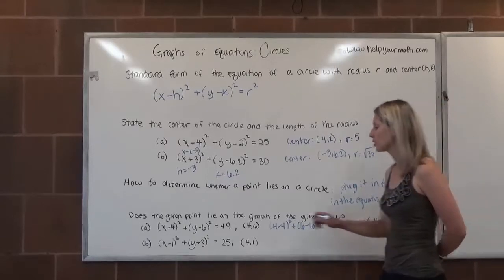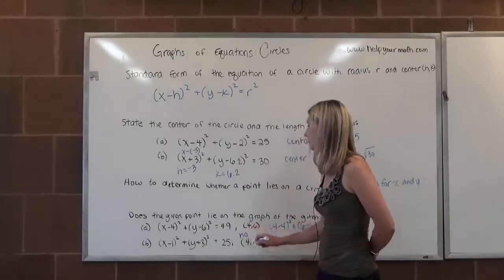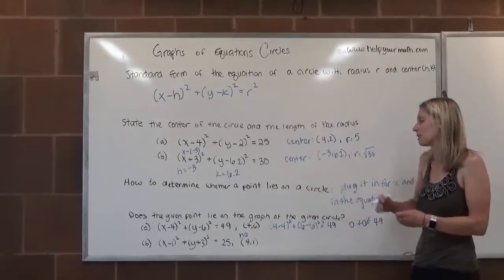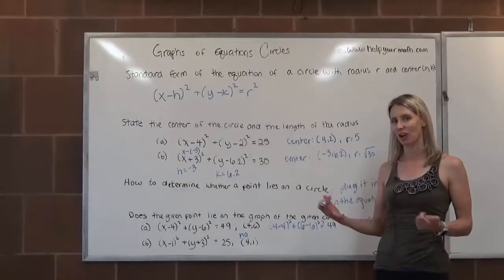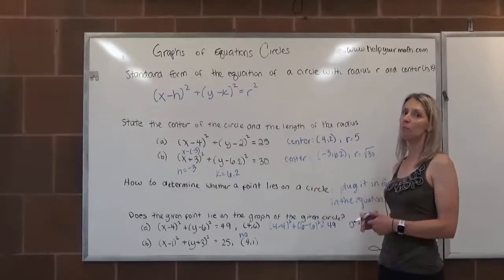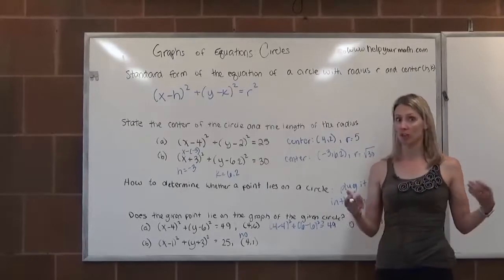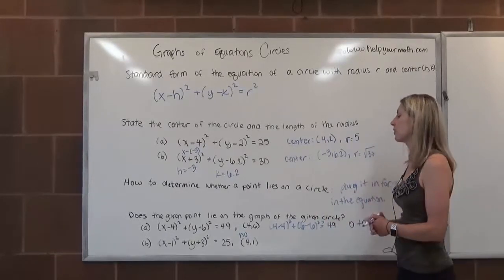Does 0 equal 49? No, it does not. So that point does not lie on the circle. In fact, you might recognize that point. It is something special about that circle. It is the center of the circle. But as I mentioned before, the center of the circle is not a point that's actually on the circle itself. So that one would be no.